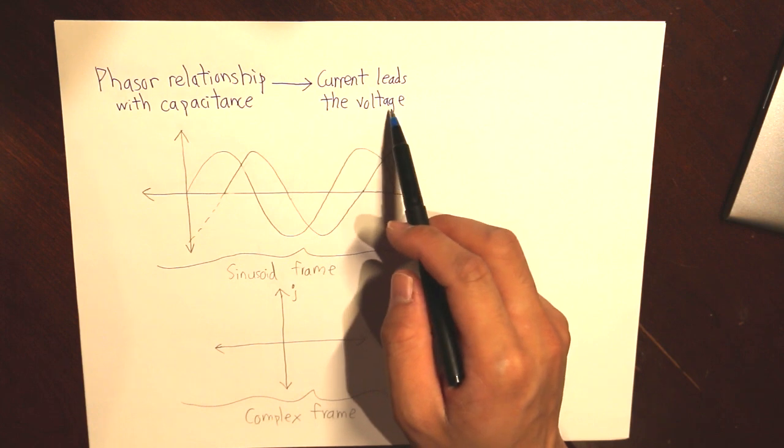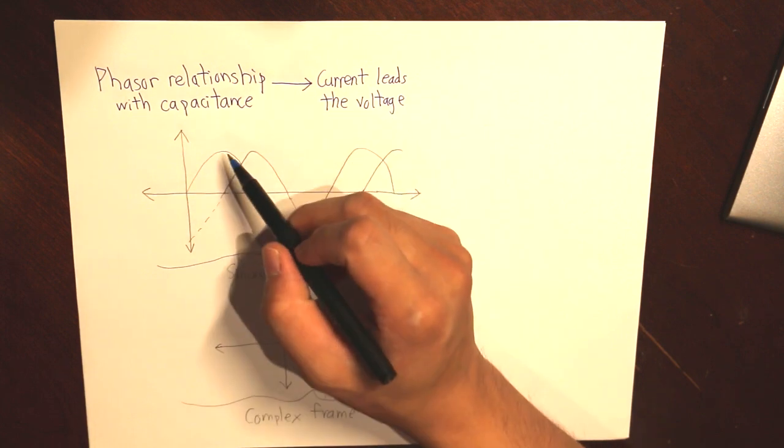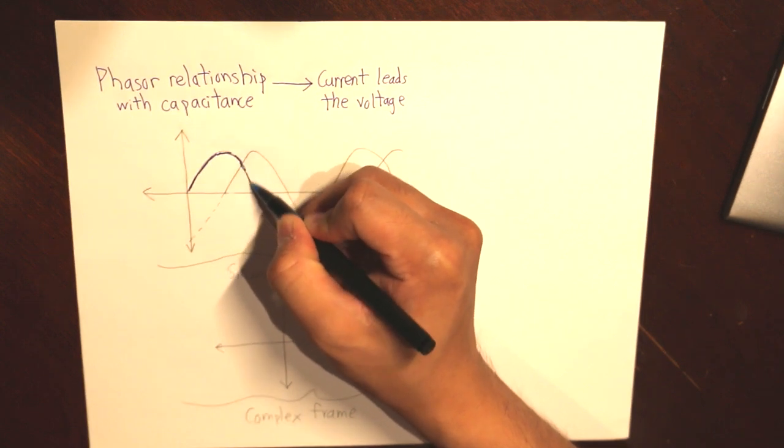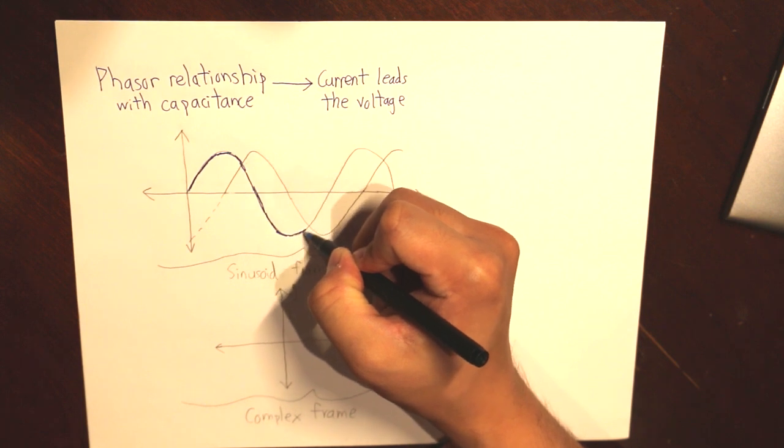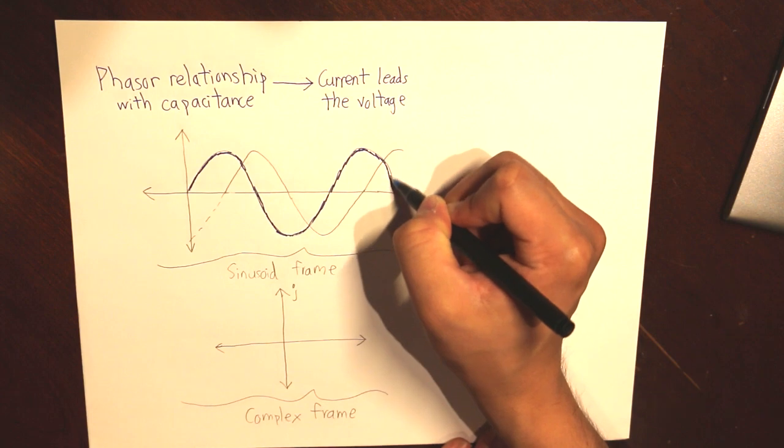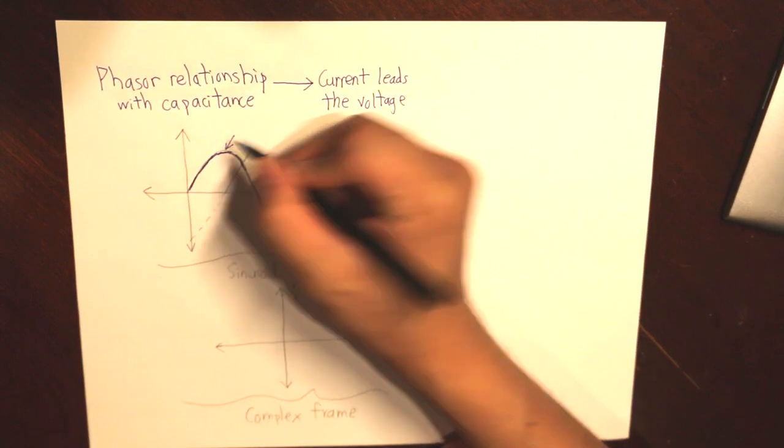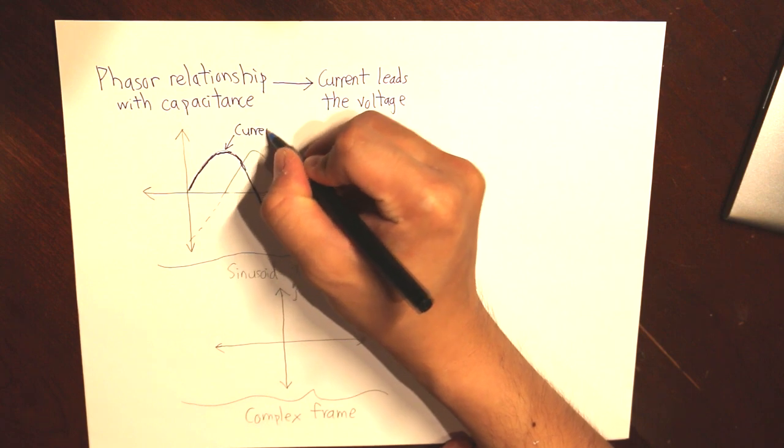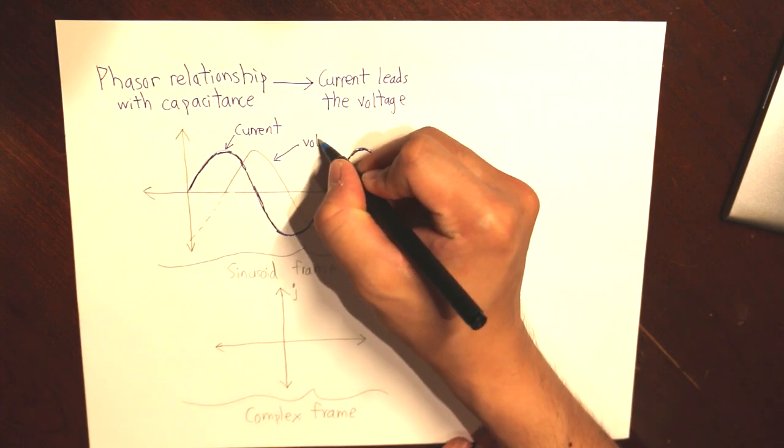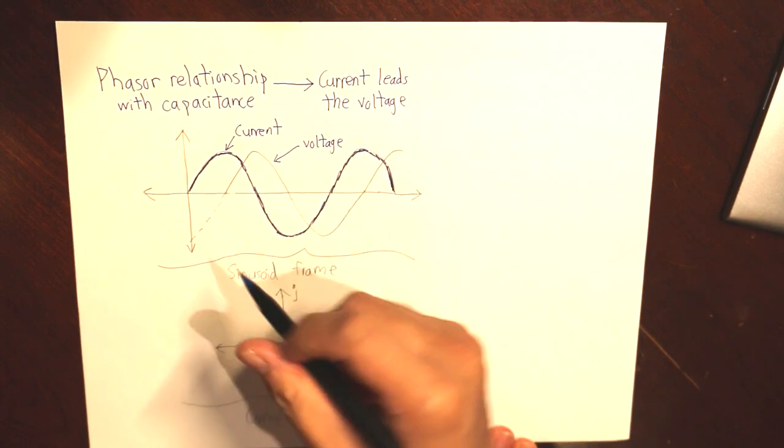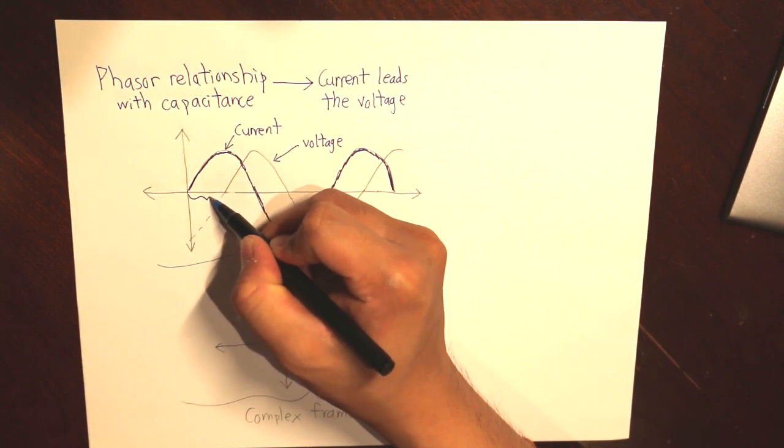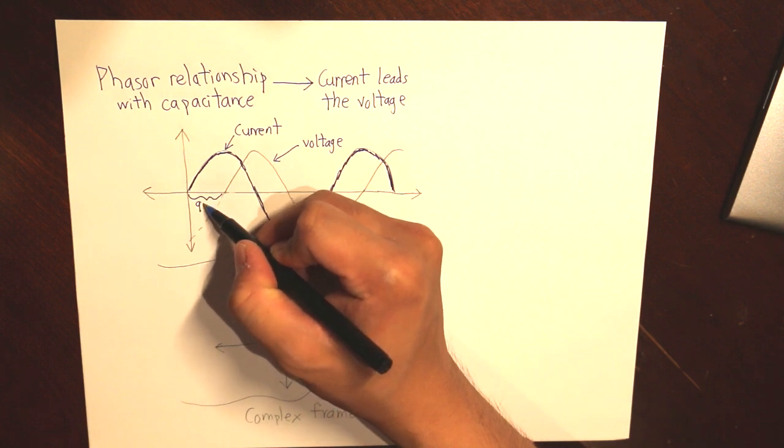By current leading the voltage, that basically means that this sinusoid is the current. And this wave is the voltage. And they're out of phase of each other. And the phase difference is 90 degrees.